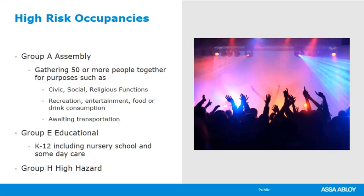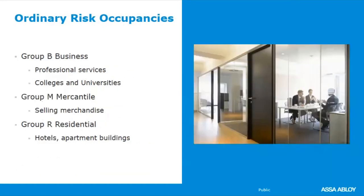Group E educational is also considered high risk, including K through 12, nursery school, and some daycare. Even though children have fire drills and are familiar with their surroundings, school-age children are prone to panic in a fire or other emergency. Group H high hazard is not a high occupancy — it's a non-occupied storage space where materials are either highly flammable or prone to explode. Ordinary risk occupancies include Group B business covering professional services and colleges and universities, Group M mercantile for selling merchandise, and Group R residential including hotels, apartment buildings, and dormitories.